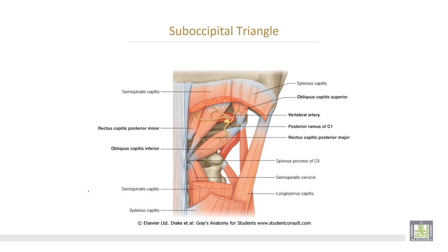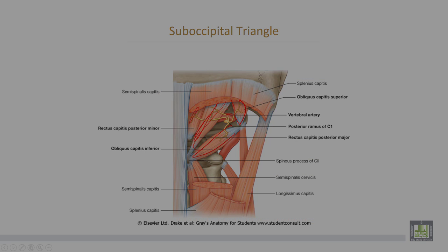This is the suboccipital triangle: rectus capitis posterior major, rectus capitis posterior minor, the superior oblique muscle, the inferior oblique, and the third part of the vertebral artery.